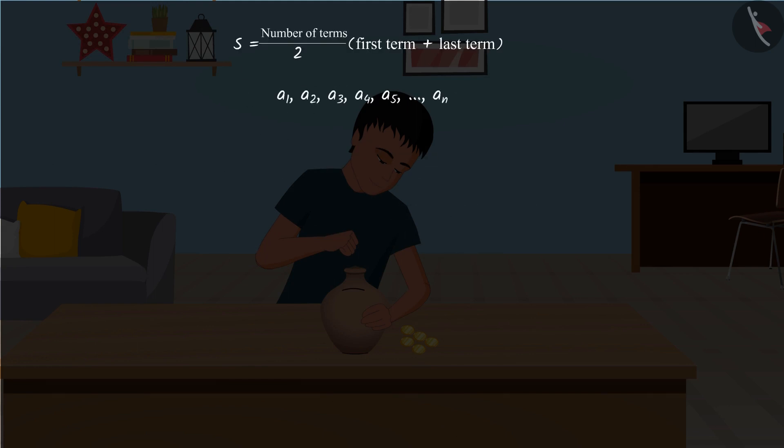Now, if we consider an arithmetic progression of n terms whose first term is a and last term, that is the nth term, is a_n, then according to the above formula, we can write the sum of the n terms of an arithmetic progression in this manner.